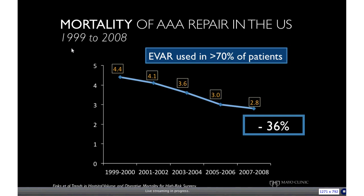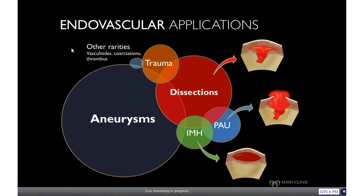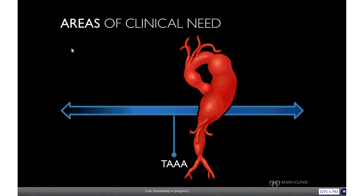This is not only for aneurysms — there is overlap with other pathology suitable to treatment with endovascular stents, including trauma, dissections, and acute aortic syndrome. However, there are major areas of clinical need where currently approved devices do not meet the anatomical criteria because of involvement of the ascending aorta or aortic arch, the renal mesenteric arteries, and the aortoiliac arteries. I would like to focus this talk on tips and tricks of fenestrated and branch endovascular repair for complex aortic aneurysms involving the renal and mesenteric arteries or thoracoabdominal aortic aneurysms.